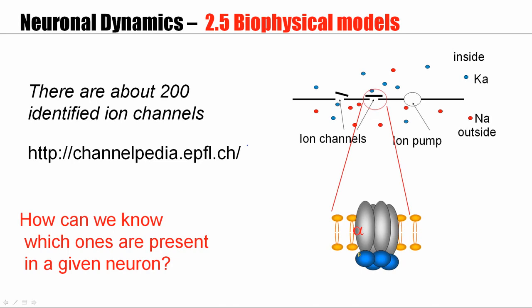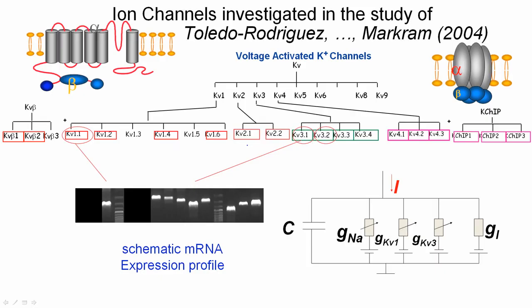Now, if there are so many ion channels, how would we know which ones are present in a given neuron? Well, you can extract a little droplet of liquid from the neuron and analyze the profile of messenger RNA, the expression profile of messenger RNA. And the ion channels are proteins. Proteins can be genetically characterized.